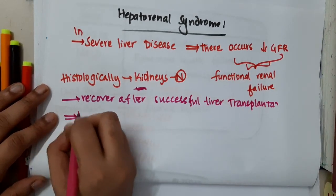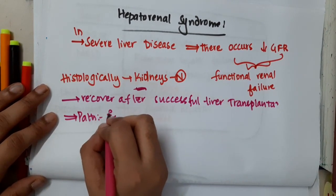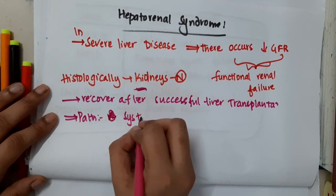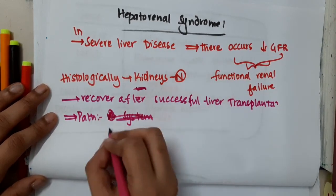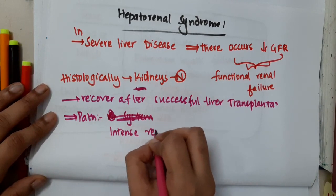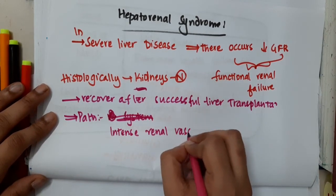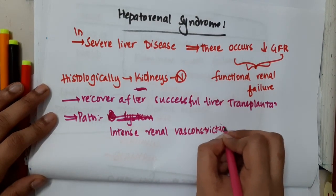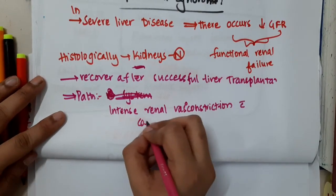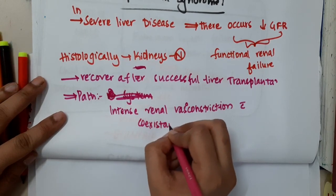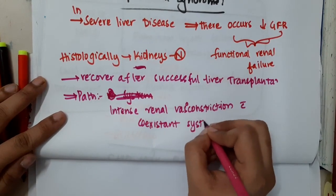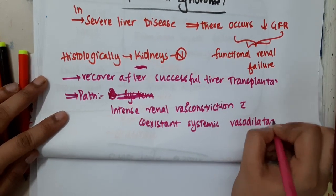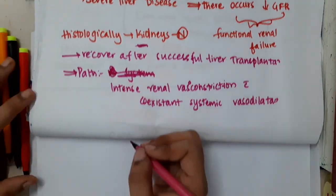The main pathology here is mainly due to intense renal vasoconstriction. The blood vessels supplying the kidneys are vasoconstricted, with co-existent systemic vasodilatation. This is the pathogenesis of hepatorenal syndrome.